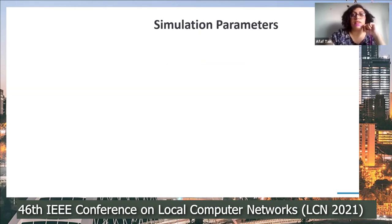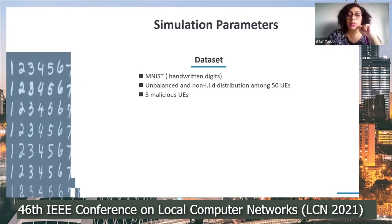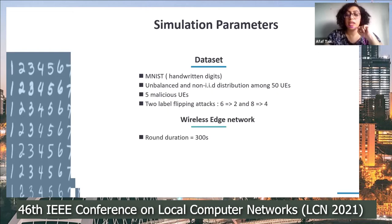To evaluate our algorithm, we use the MNIST handwritten digits dataset, widely used for image classification benchmarks. We created unbalanced and non-IID distributions among 50 UEs across several runs. In each run, we selected five UEs to be malicious, with maliciousness displayed through two label flipping attacks: the first flips label six into two (considered mild), and the second flips eight into four, considered very harmful to overall convergence by previous works. Wireless edge environment parameters were fixed throughout the simulations.